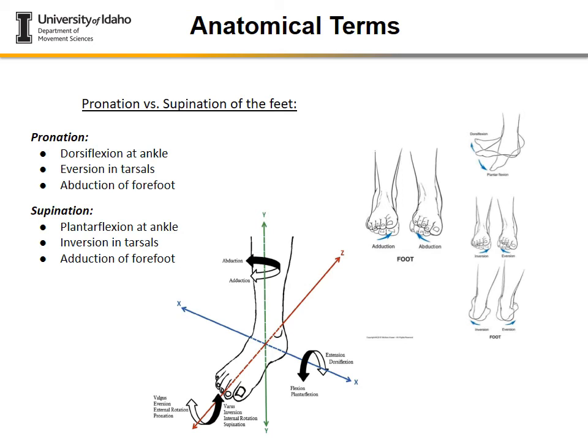An important concept — especially relevant to endurance running research — is understanding pronation and supination of the foot. Pronation is a combination of three components: dorsiflexion (upward motion at the ankle), eversion (which happens at the tarsals), and abduction of the forefoot. Supination is simply the opposite: instead of dorsiflexion it's plantar flexion at the ankle.